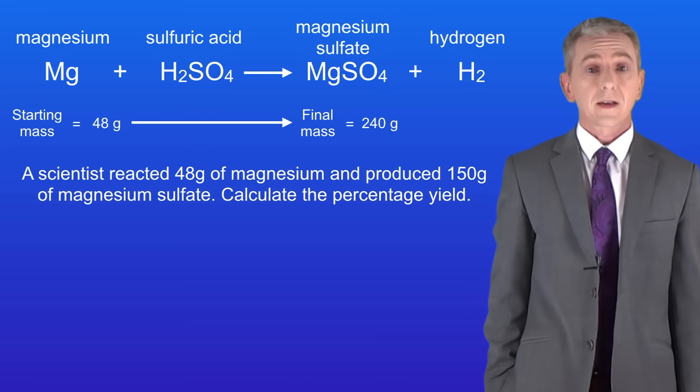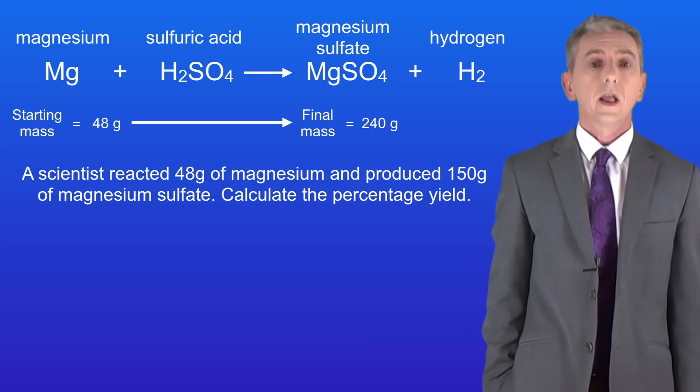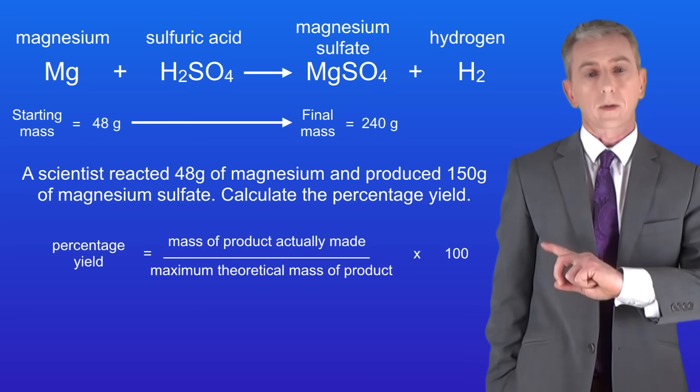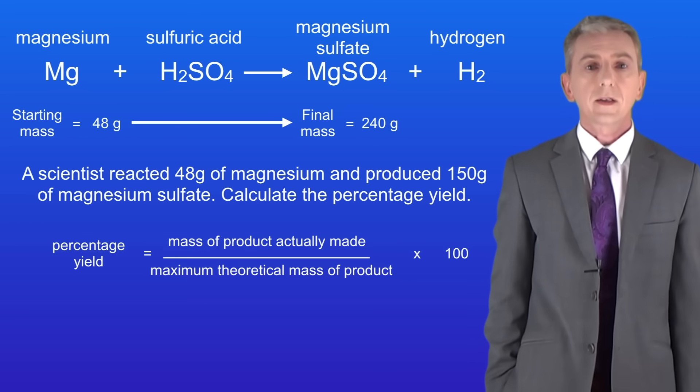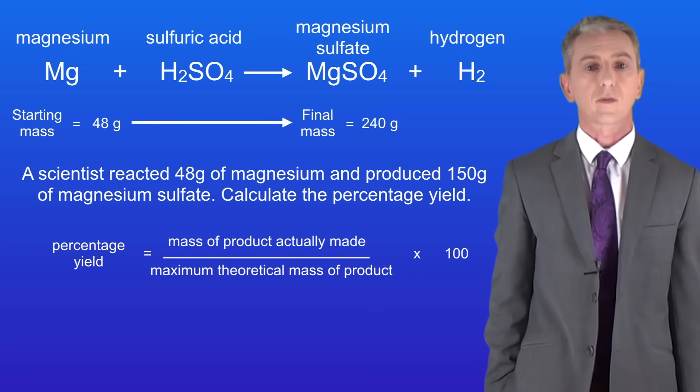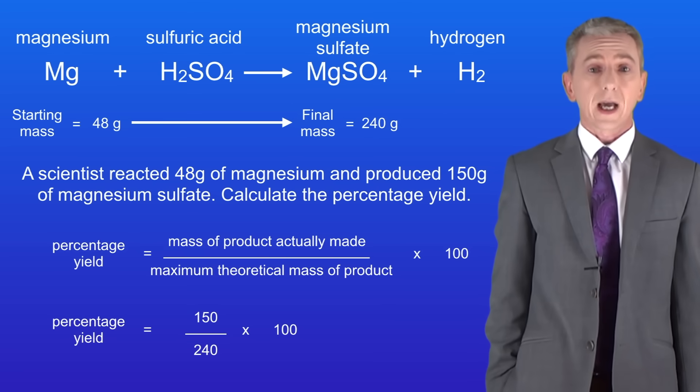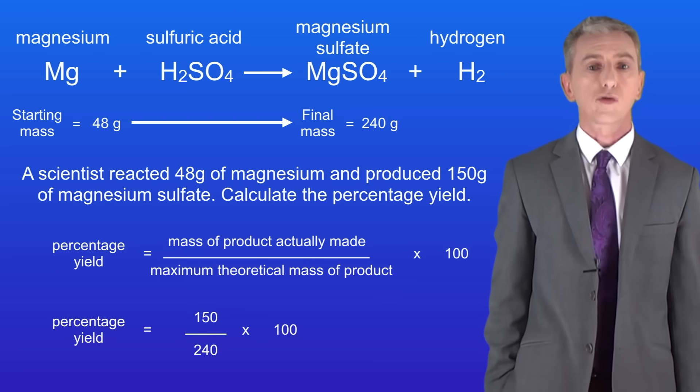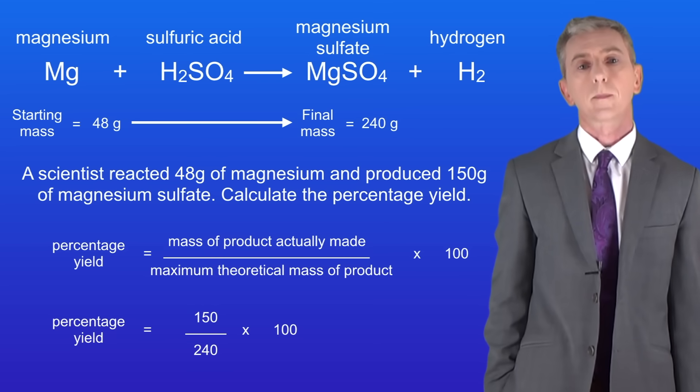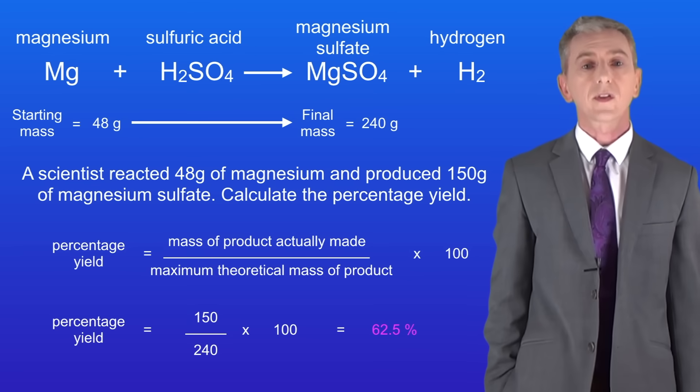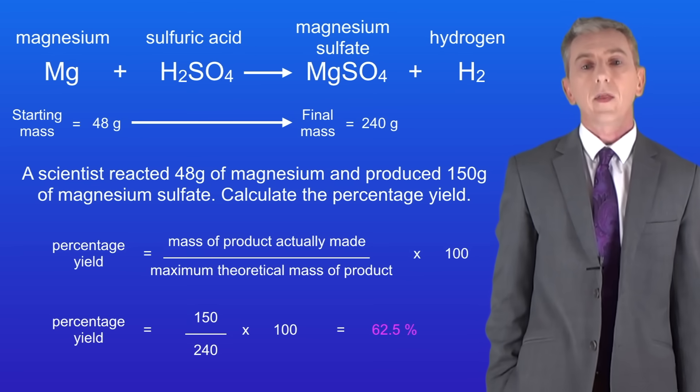So as we can see the scientist did not achieve 100% yield. So how do we calculate the yield achieved? We use this equation. The percentage yield equals the mass of product actually made divided by the maximum theoretical mass of product multiplied by 100. The mass of product actually made was 150 grams and the maximum theoretical mass of product was 240 grams. Putting these numbers into the calculation gives us a percentage yield of 62.5% and that's our final answer.